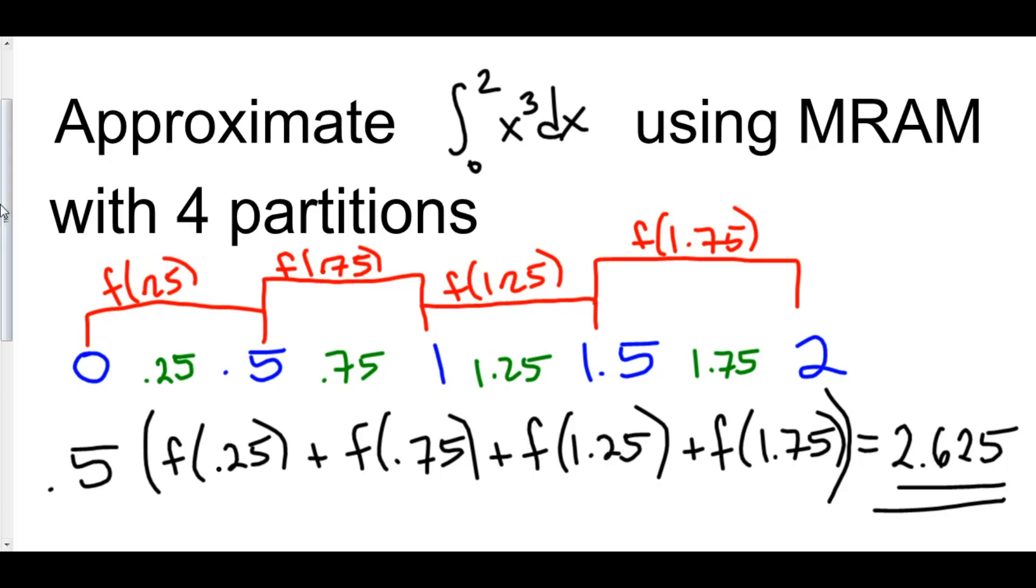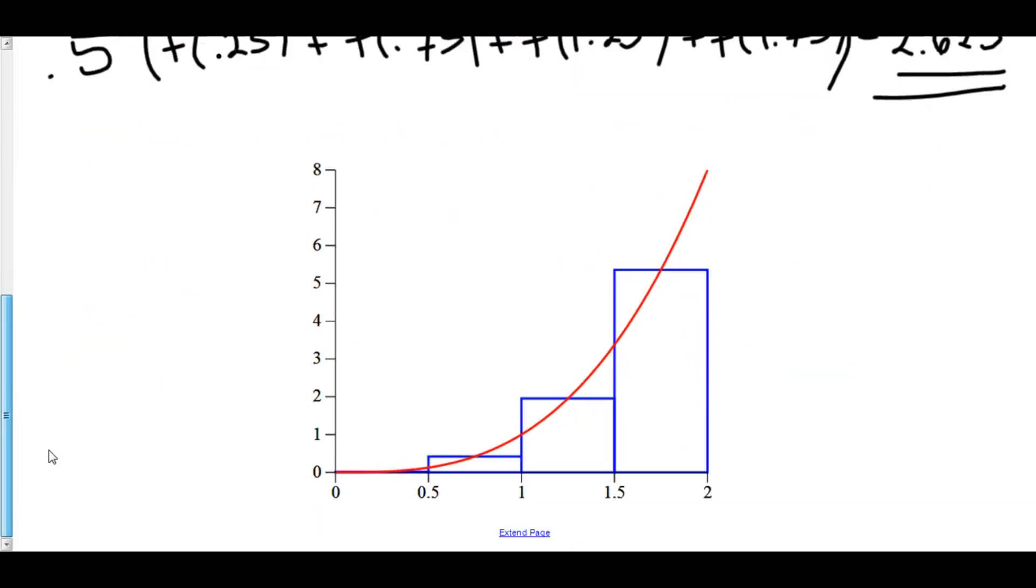And just for clarity, here's what the graph looks like. We go from 0.25 up and over. We go from 0.75 on over, 1.25, so again we're looking in between the midpoint between these x values that we've been working with before, and finally, 1.75 and on over.